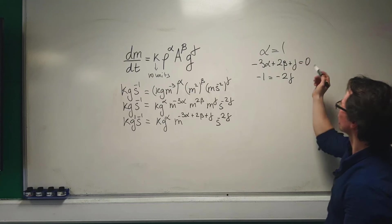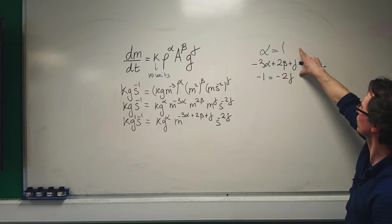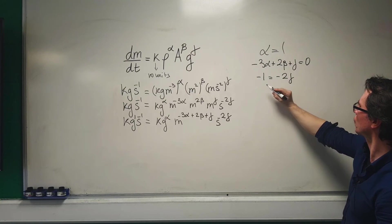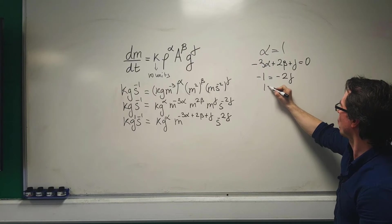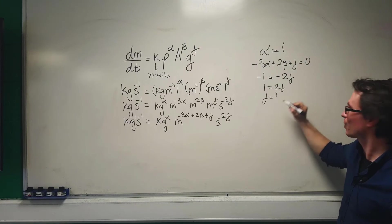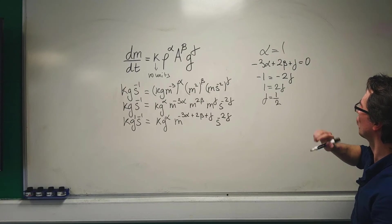This is a straightforward system. From -1 = -2γ, we get 1 = 2γ, so gamma equals one-half.